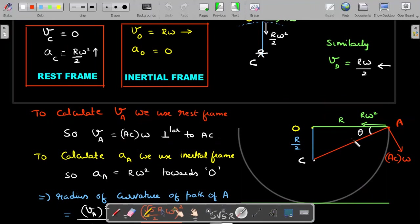So keeping these rest frame and inertial frame in mind, let's go further and dig into the calculation of point A. To calculate point A's velocity, I use the center of mass frame. For a person sitting here, he will think the point A's radius is this red colored thing and velocity would be perpendicular to the radius equal to this length AC times omega. It's very simple. So to calculate VA, we use rest frame which is center of mass frame. VA is equal to AC into omega perpendicular to AC.